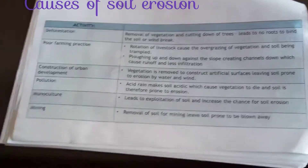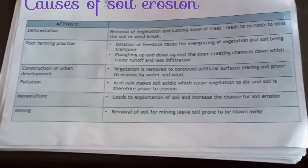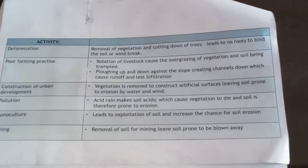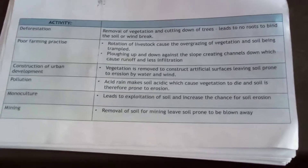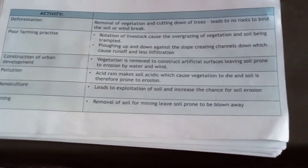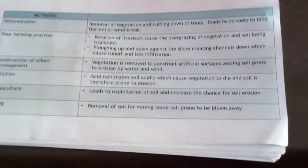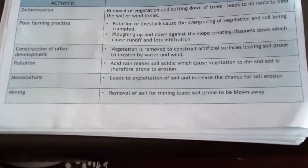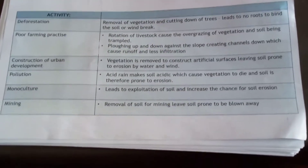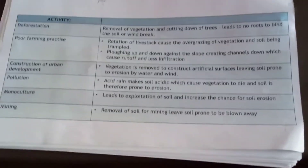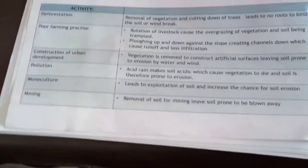What are the causes of soil erosion? Soil erosion is caused by many activities, especially human activities. Deforestation — the removal of trees — is one cause. The roots of trees bind the soil together, so when we remove or cut down trees, we no longer have roots binding the soil. This leaves the land bare and agents of wind and water can easily wash away the topsoil.